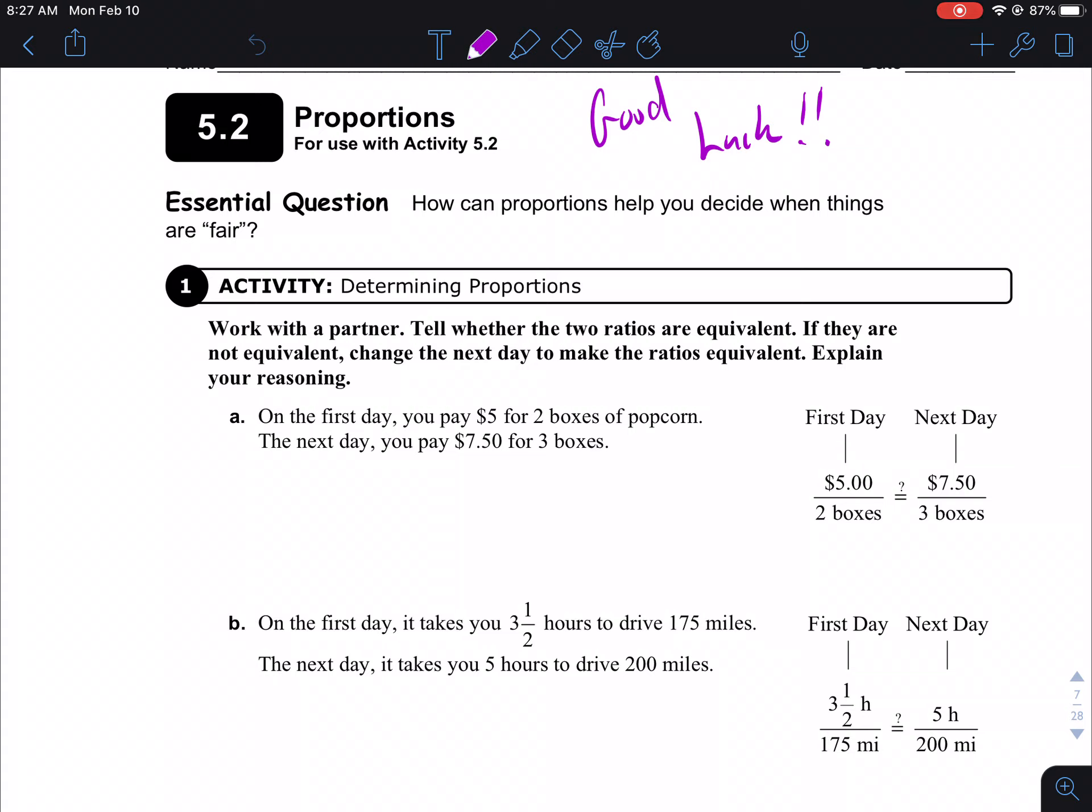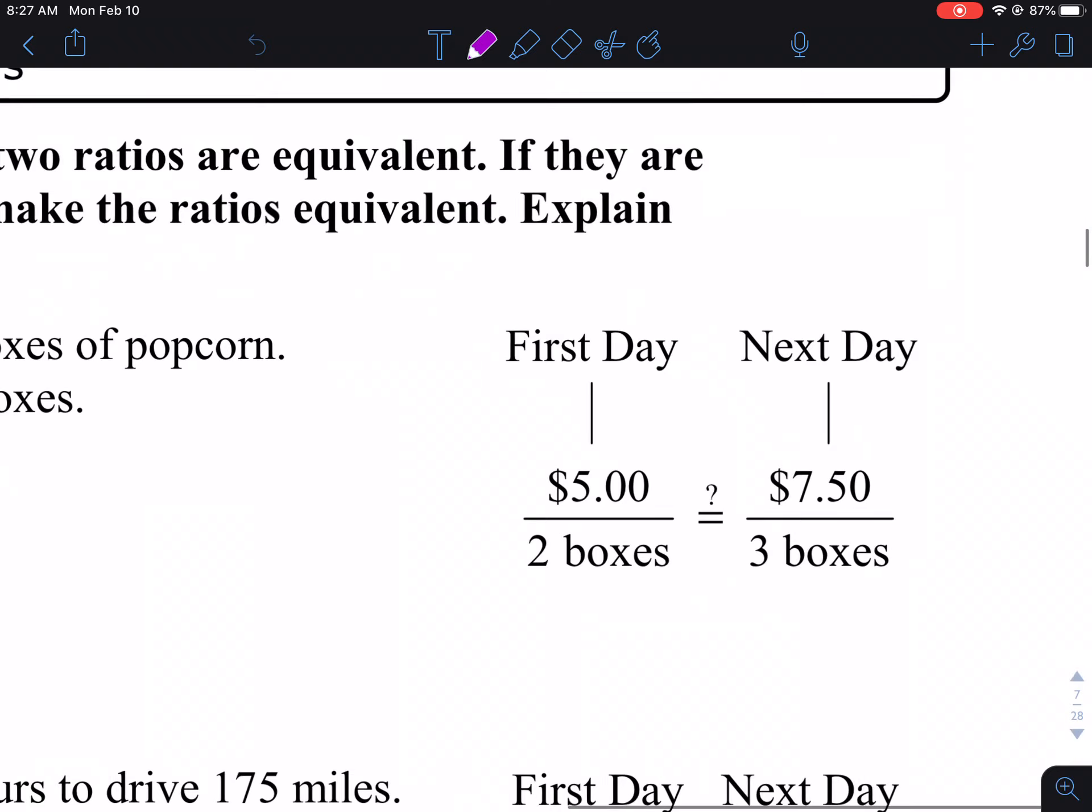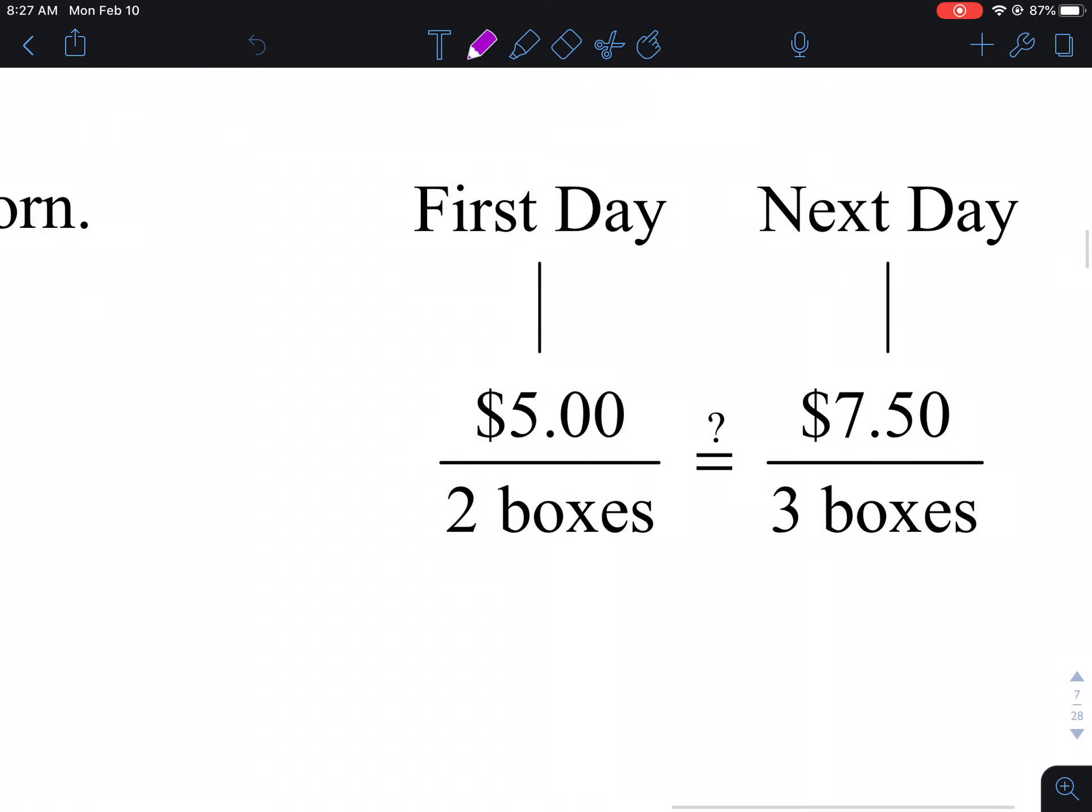Okay, so here's what it says. On the first day, you pay $5 for two boxes of popcorn. On the second day, you pay $7.50 for three boxes. Is that the same rate? In other words, is it fair that you paid $5 for two boxes and the next day you pay $7.50 for three boxes? So here's what I do. I'm going to zoom in here for a second. It would be nice to know, and this is the key, it would be nice to know what the unit rate is. What are you paying for one box?